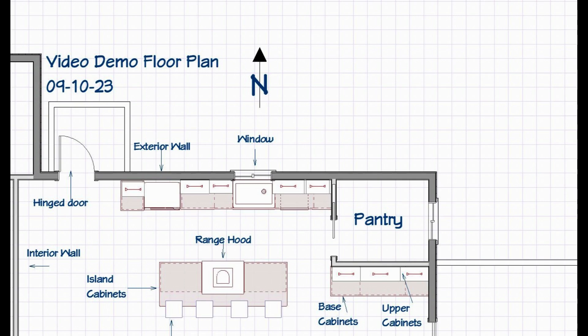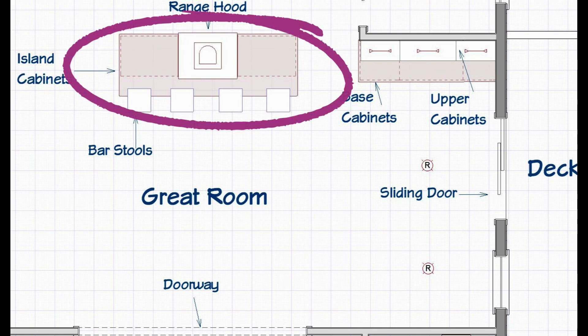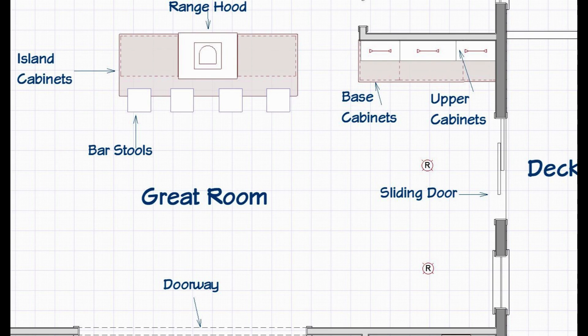Now we're going to move to the bottom half and talk about what we see on there, then move on to actual 3D renderings of the rooms. Here we are in the bottom half of the floor plan of this great room. The first thing you're going to notice is the island in the middle. The island has a cooktop on it, and there we see the range hood that's over the cooktop. We've got bar stools at the eat-at counter that's attached to the island.